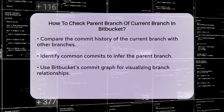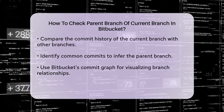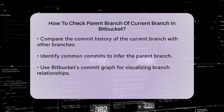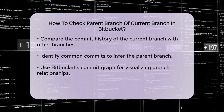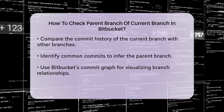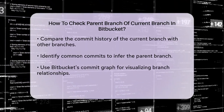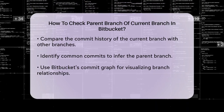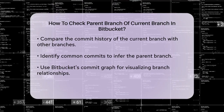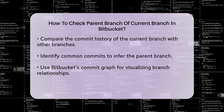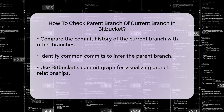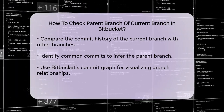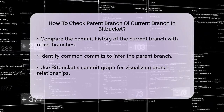For example, if you see that the latest commits on your current branch are also present in the main branch, it's likely that main is the parent branch. You can use the commit graph in Bitbucket to visualize this relationship, making it easier to identify the parent branch.